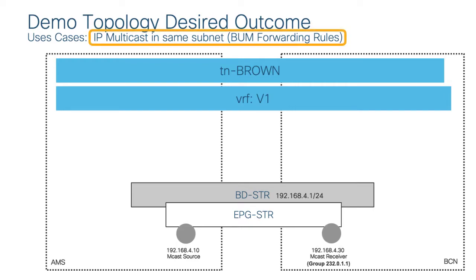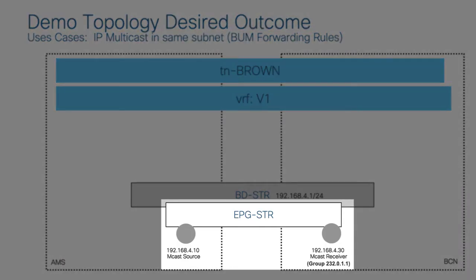In this first, simplest example, I'll show IP multicast in the same subnet — the case where BUM forwarding traffic rules apply. Technically, we're not really routing multicast even though the packet has an IP header, because my multicast source and receiver are both in the same stretched EPG and same subnet.